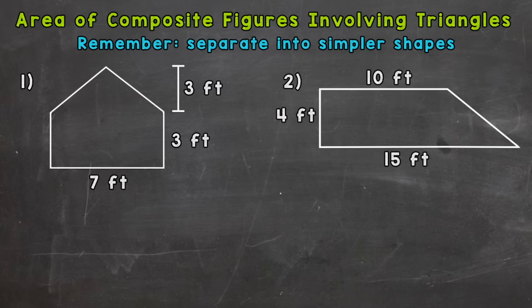Let's jump right into number one here, where we have something that kind of looks like the outline of a house. The first thing we need to do is separate into simpler shapes. I'm going to cut this shape right here and label the top triangle A, and the bottom rectangle B.